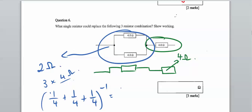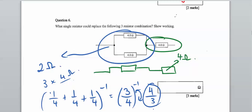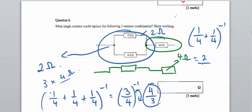For two 4-ohm resistors in parallel: 1/4 plus 1/4 to the power of negative 1 equals 2/4 to the power of negative 1, which equals 4/2, or just 2 ohms. So the equivalent resistance of the parallel section is 2 ohms. What single resistor could replace the three-resistor combination? You have a 2-ohm resistor in series with a 2-ohm resistor, so it's going to be 4 ohms total.